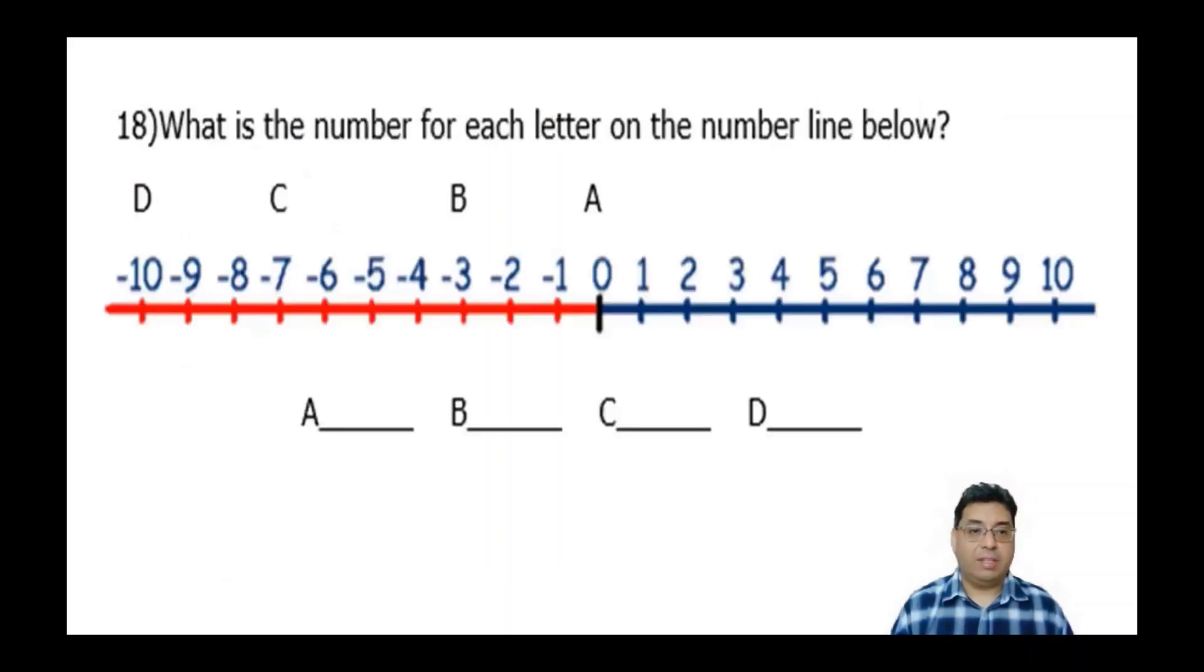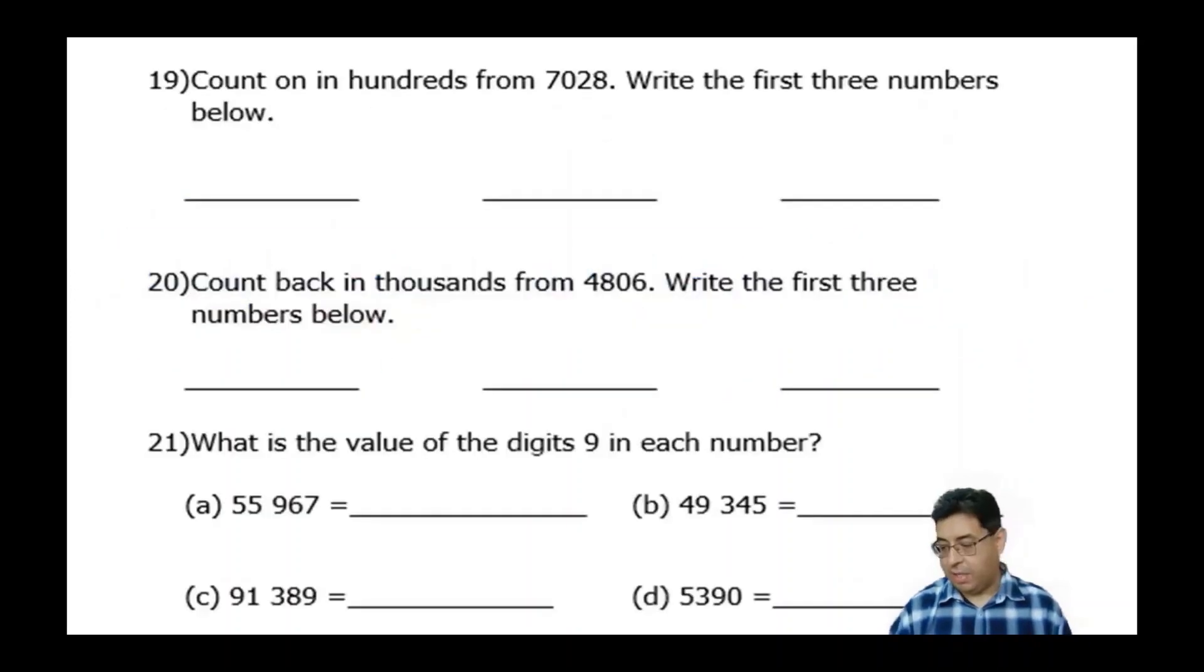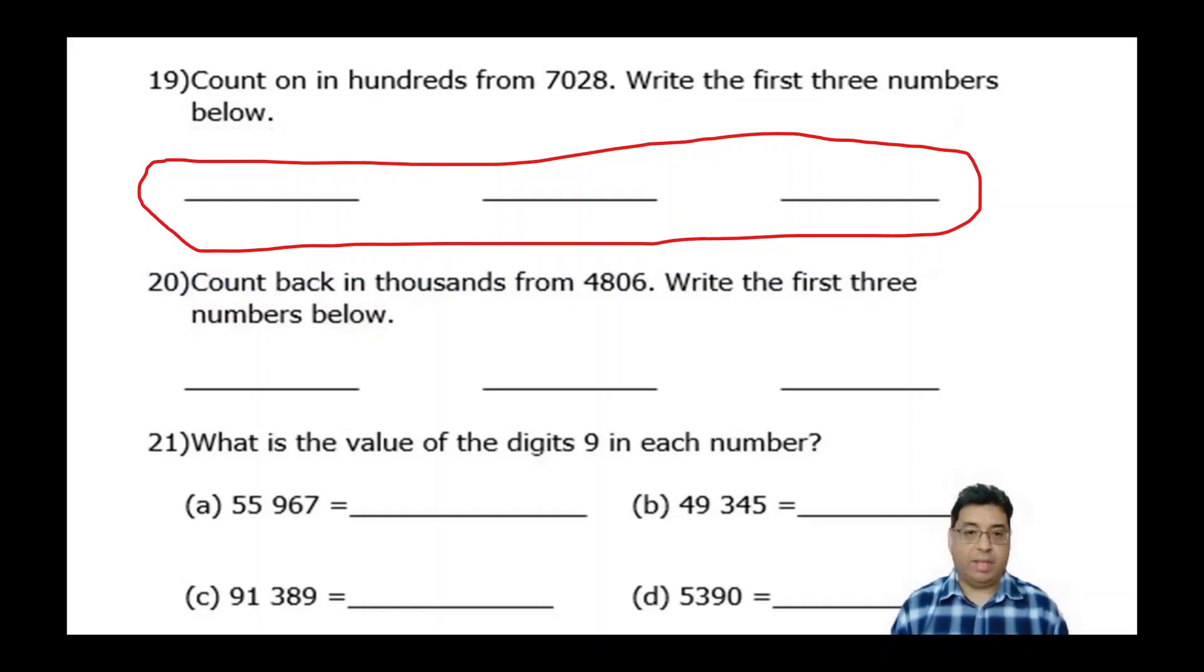Number 18, what is the number of each letter on the number line below? So again, there's the number line and just do as it asks. Number 19 says count on in hundreds from 7,028. Write the first three numbers below. So again, just read it and do what it says.